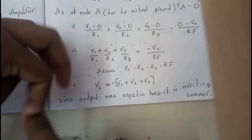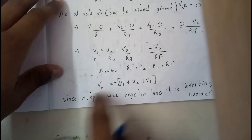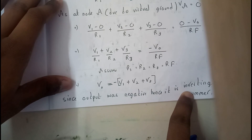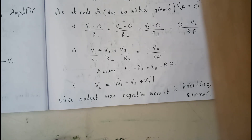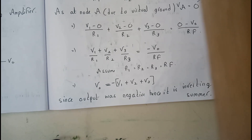The negative sign indicates a phase shift of 180 degrees, hence the output is negative — and this is why it is called an inverting summing amplifier. I hope everyone got a clear idea on this. It's really simple and easy with no confusion. Next we'll be going through the non-inverting summing amplifier. Thank you for watching.